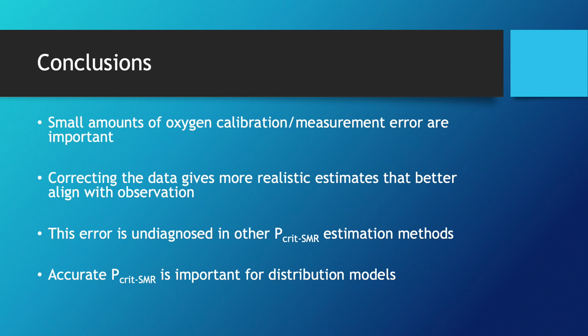Additionally, this type of error is undiagnosed in other P_crit estimation methods, like the breakpoint method, that rely on regressions through different parts of the data and are not fixed with a zero-intercept. Finally, this work is important, as accurate determinations of the supply capacity and its use in calculating P_crit are critical for physiological range distribution models that use these parameters to define metabolically available habitat.